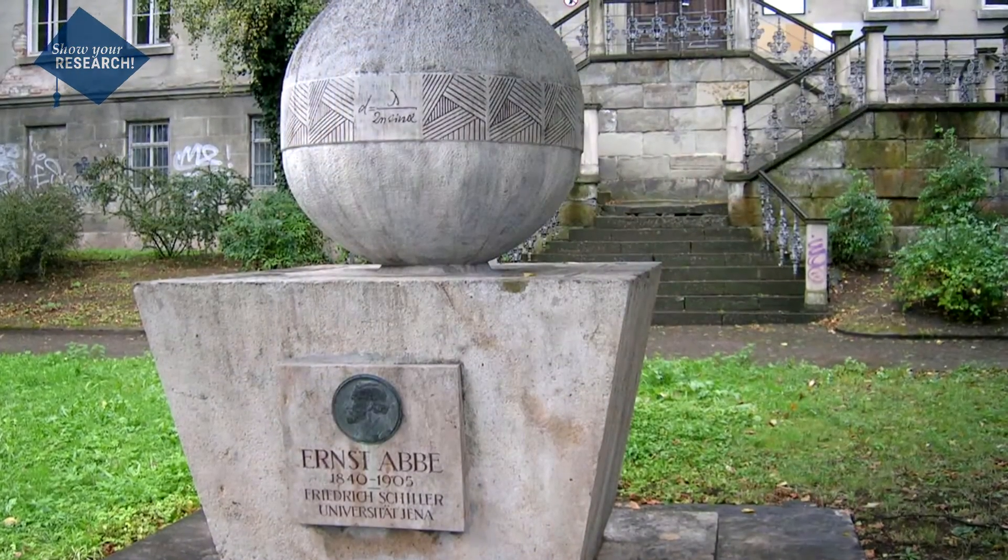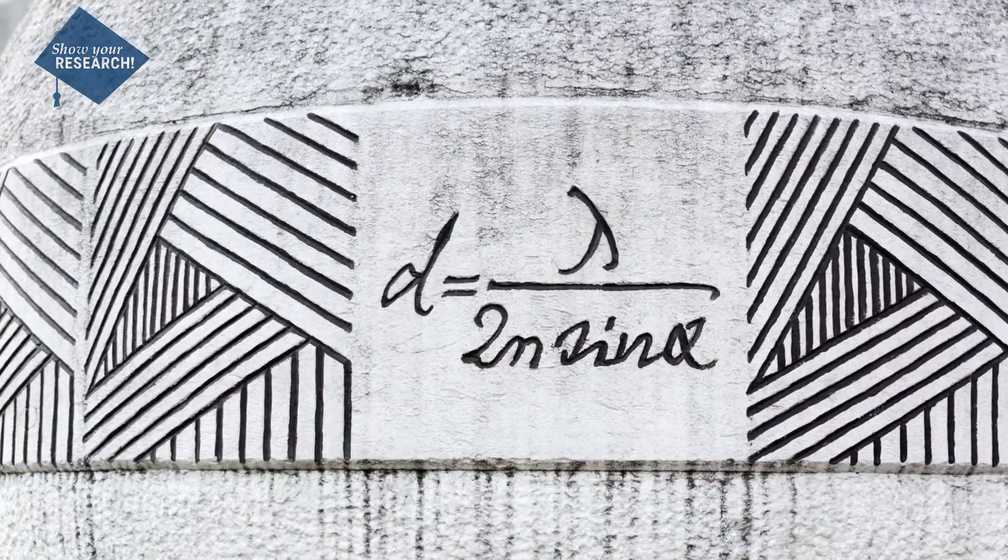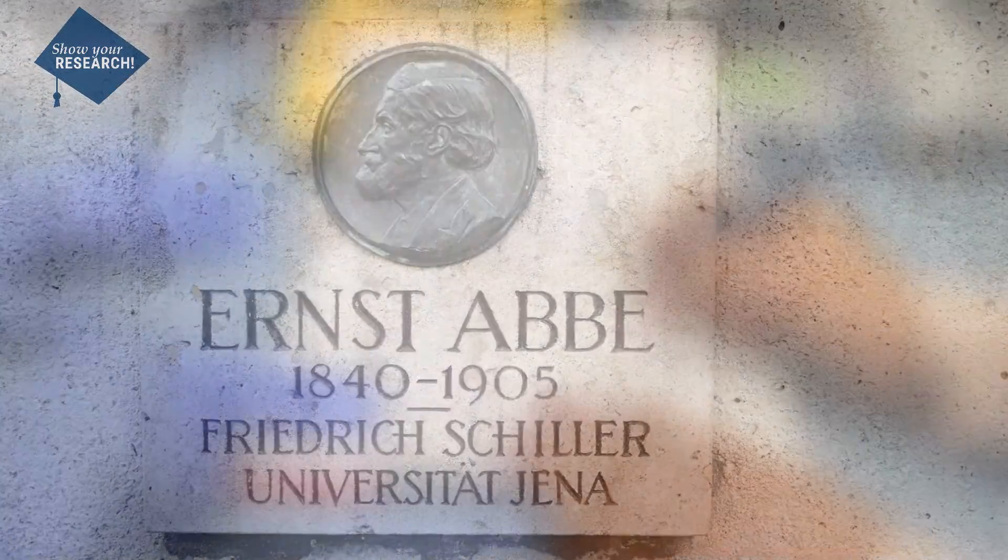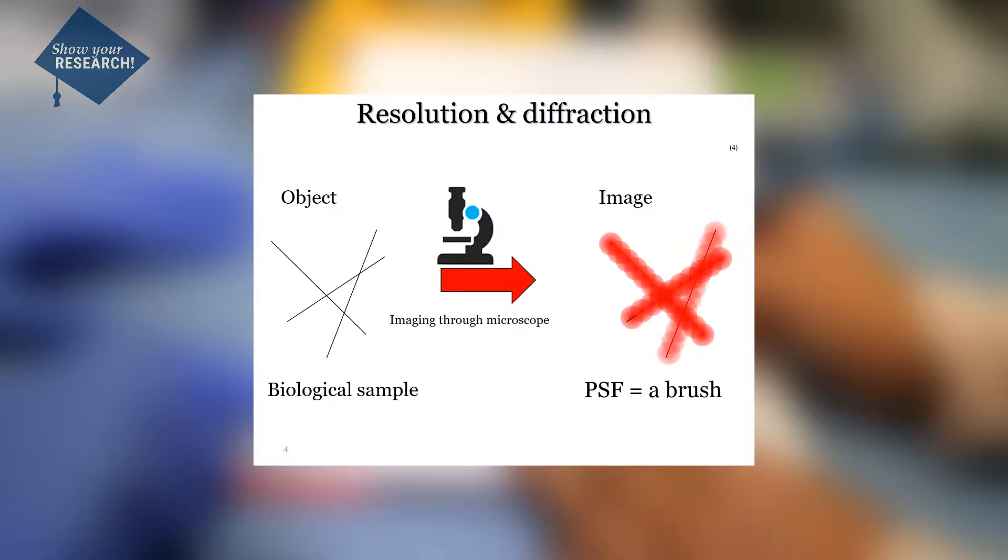Almost 150 years ago, Ernst Abbe realized, as long as all the diffraction orders can pass the mechanical equipage of the lens, the structure to image is clearly visible. This means that everything below the resolution limit is completely blurred. Since every object is a summation of different points, the resulting image can be described as a summation of blurred points.